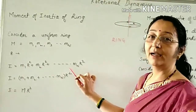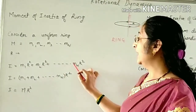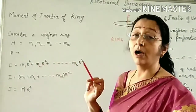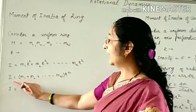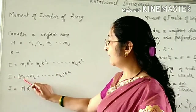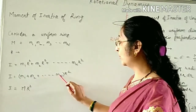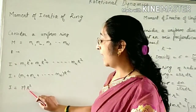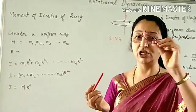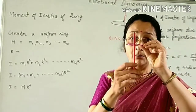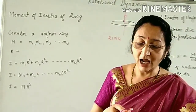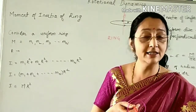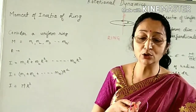Similarly, I write for all the particles up to Mn·R². Taking R² common, the moment of inertia I = (M1 + M2 + ... + Mn)·R² = M·R². This is the moment of inertia of the ring when it is rotating about the transverse axis passing through its center.